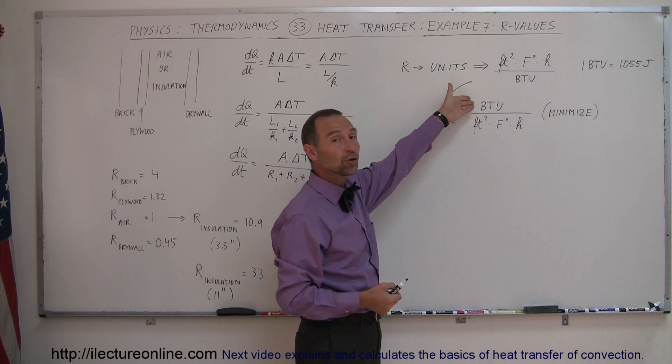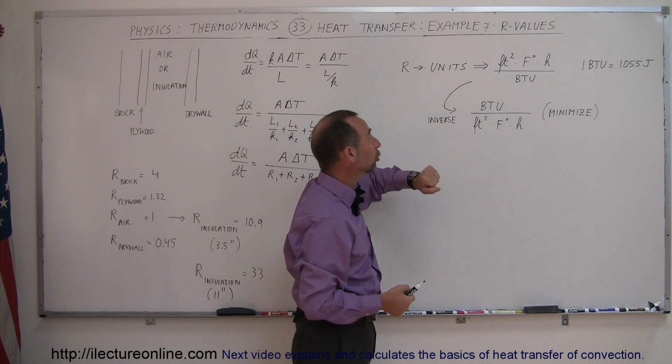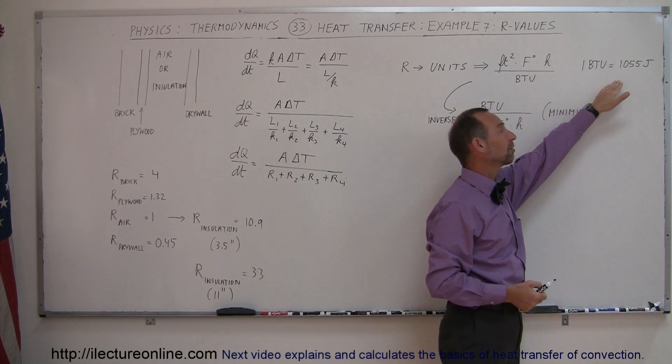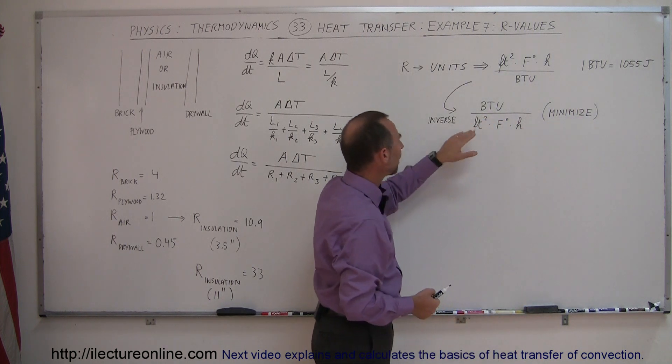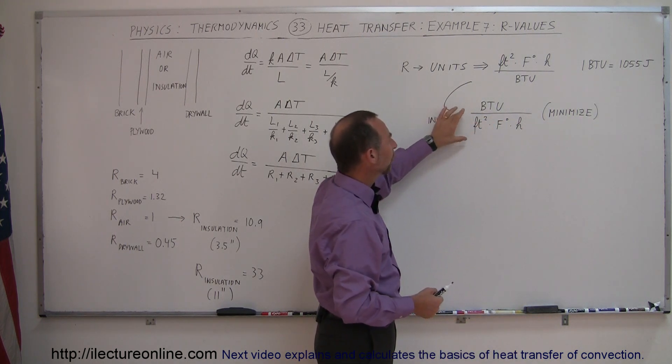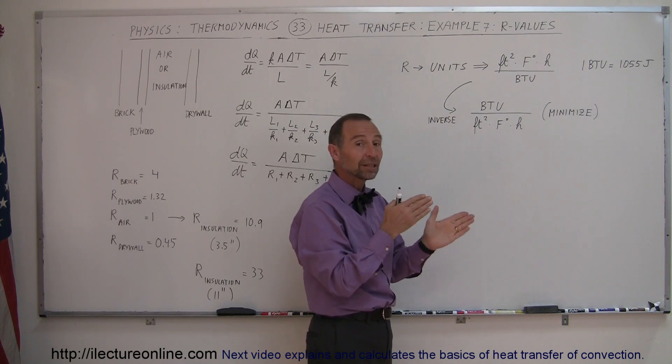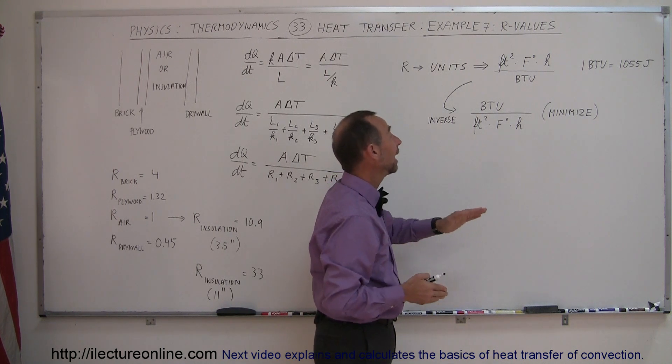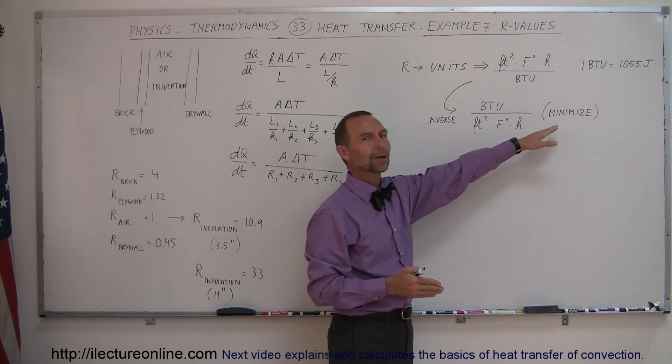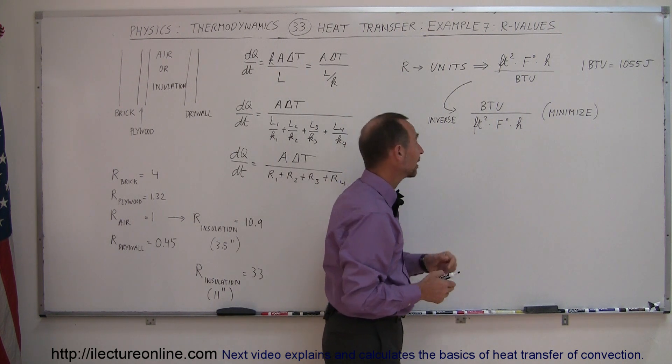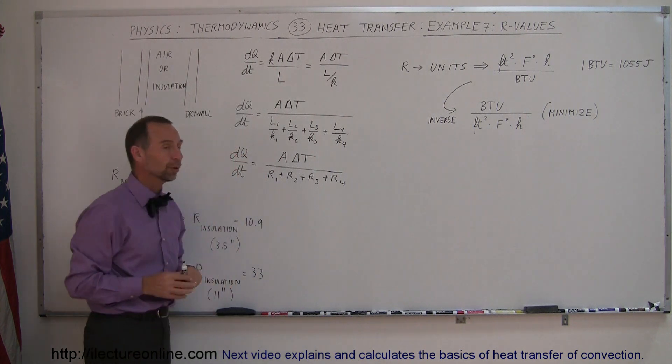notice you have BTUs per square foot per degree Fahrenheit per hour. This means that the R-rating is an indication of how many BTUs you will lose—and the BTU is 1,055 joules—so how many BTUs you will lose per square foot of surface of the wall, per Fahrenheit degree difference between the inside and outside, and per hour. You want to minimize that, and minimizing that means you want the biggest R-values possible.